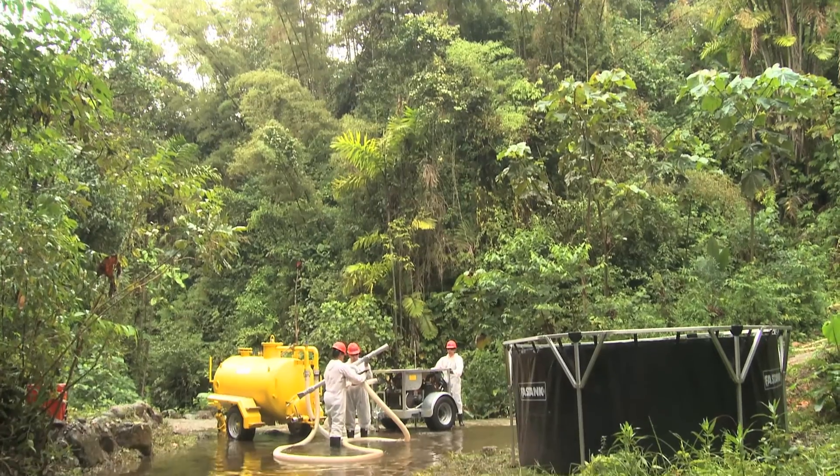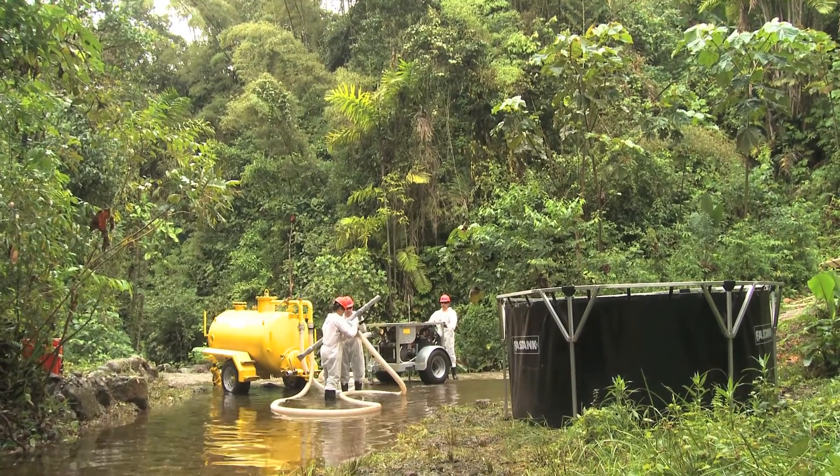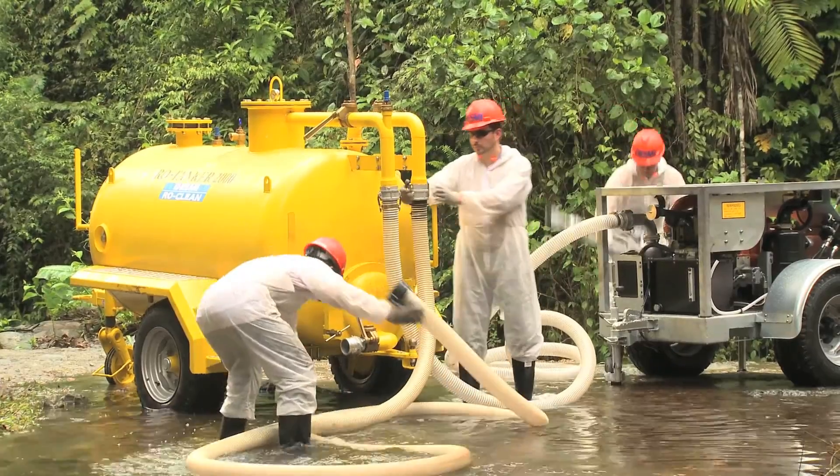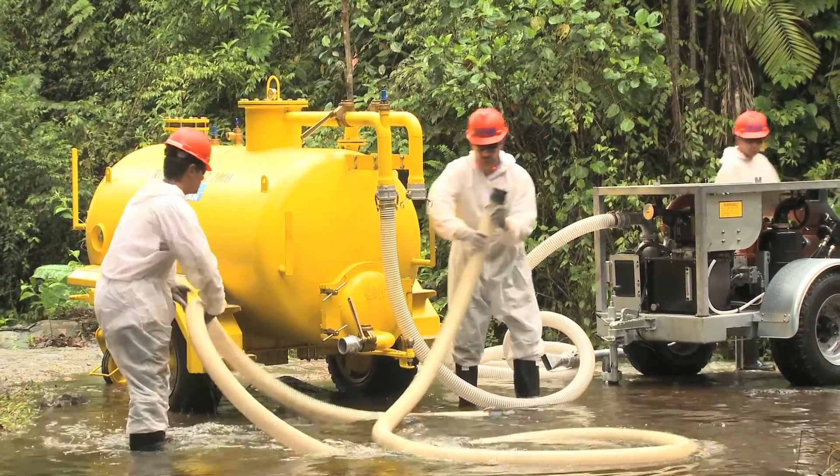When the row tanker is full, it can be emptied by gravity. Simply open the drain valve located in the lower part of the tank or using an external pump.